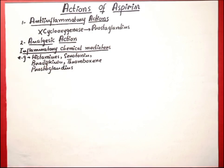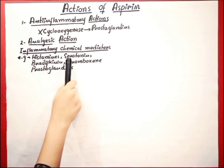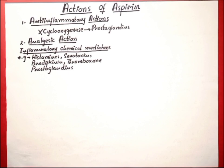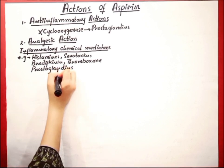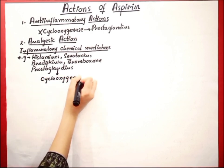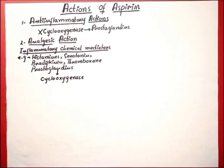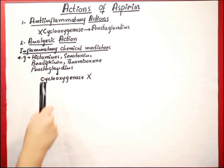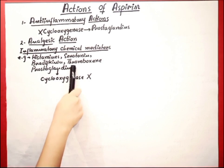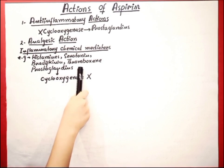These inflammatory chemical mediators are released from our body during inflammation, and all of them are released in the presence of, or by the action of, cyclooxygenase enzyme. Since aspirin inhibits cyclooxygenase enzyme, we automatically get relief from pain, because these chemical mediators are what cause pain and inflammation in our body.